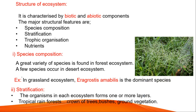Structure of ecosystem is characterized by biotic and abiotic components, meaning living things and non-living components. The major structural features are four types: species composition, stratification, trophic organization, and nutrients.